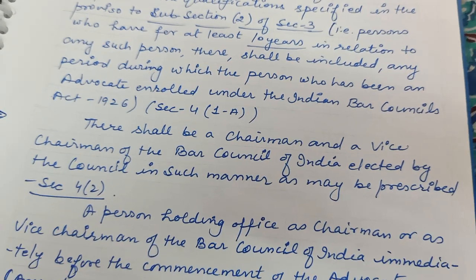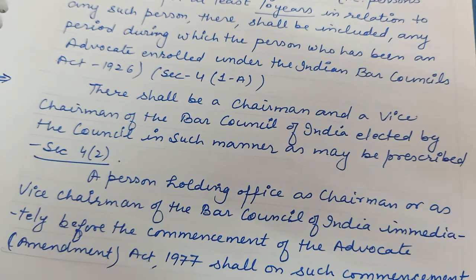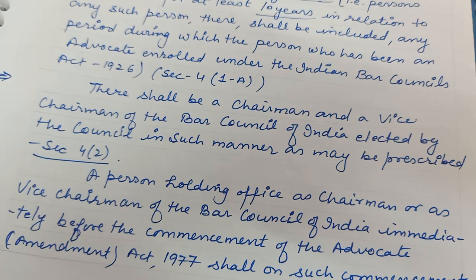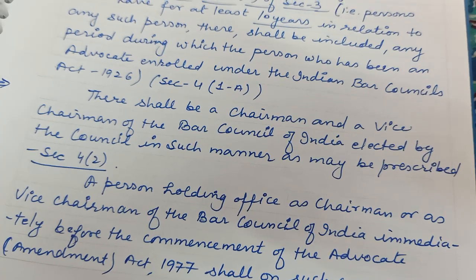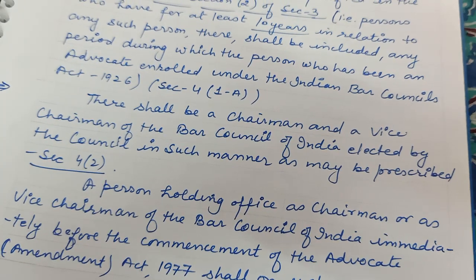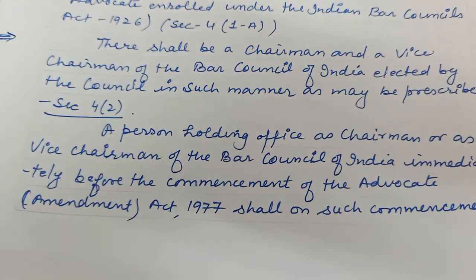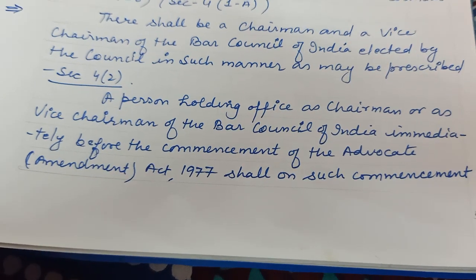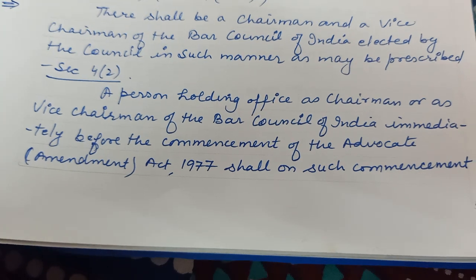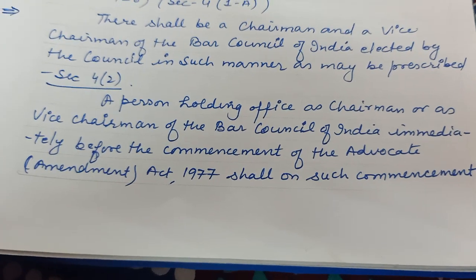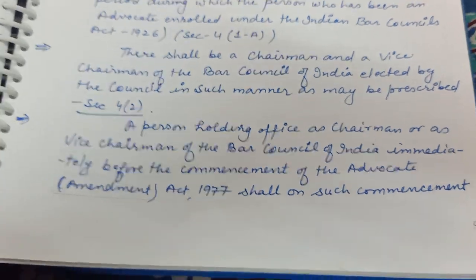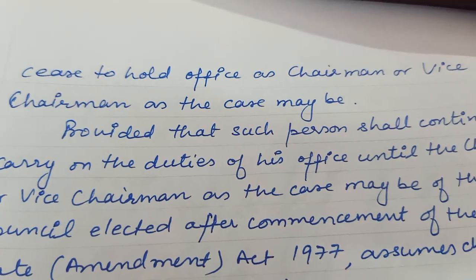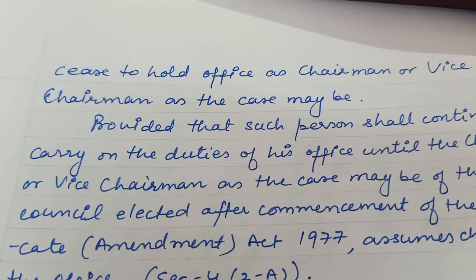Section 4 states there shall be a chairman and a vice chairman of the Bar Council of India, elected by the council in such manner as may be prescribed. The person holding office as chairman and vice chairman of the Bar Council of India immediately before the commencement of the 1997 amendment shall, after such commencement, cease to hold that office.